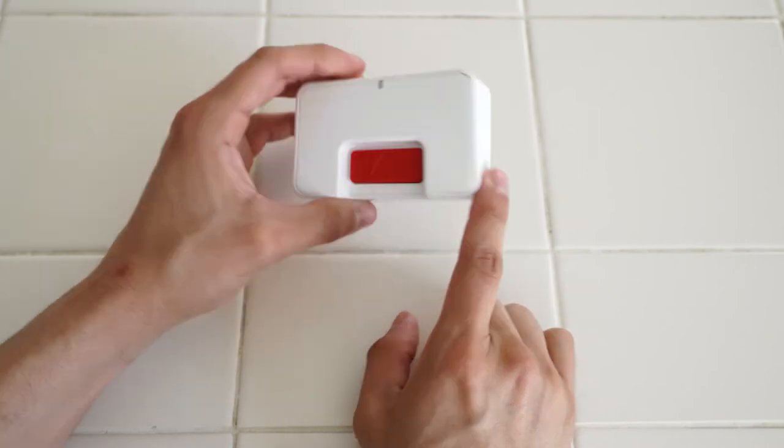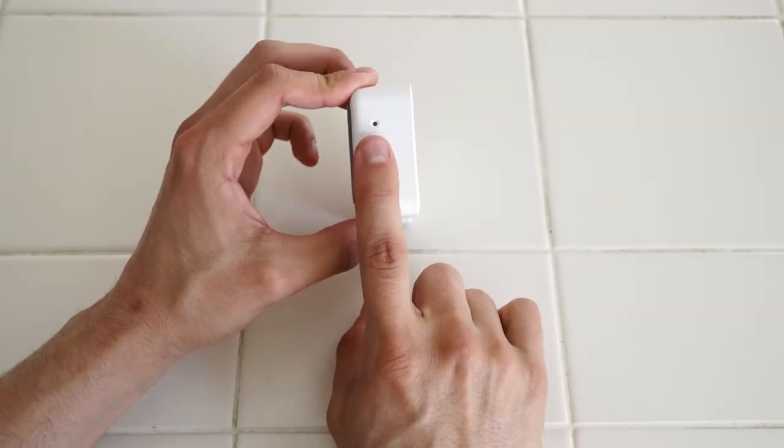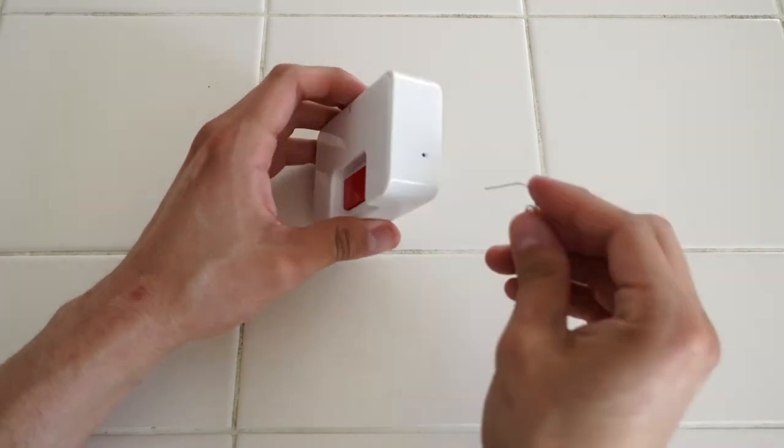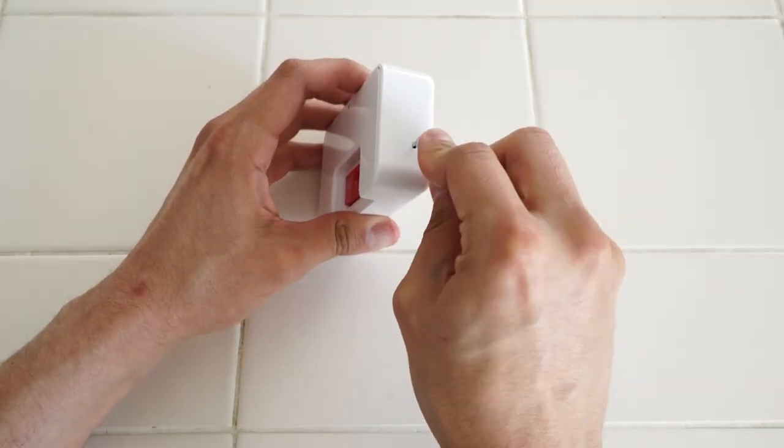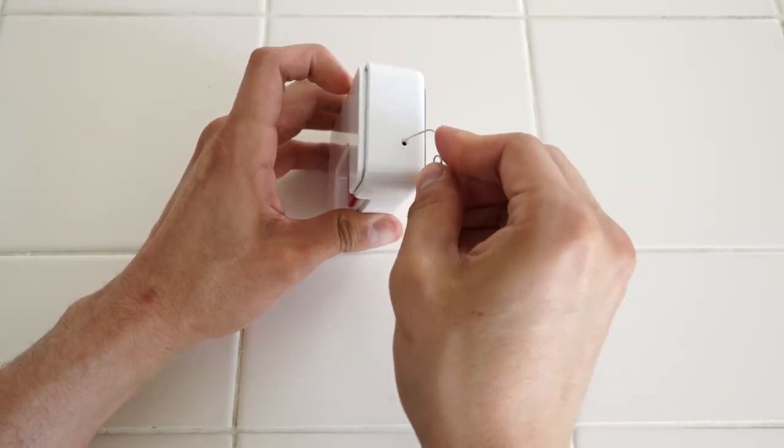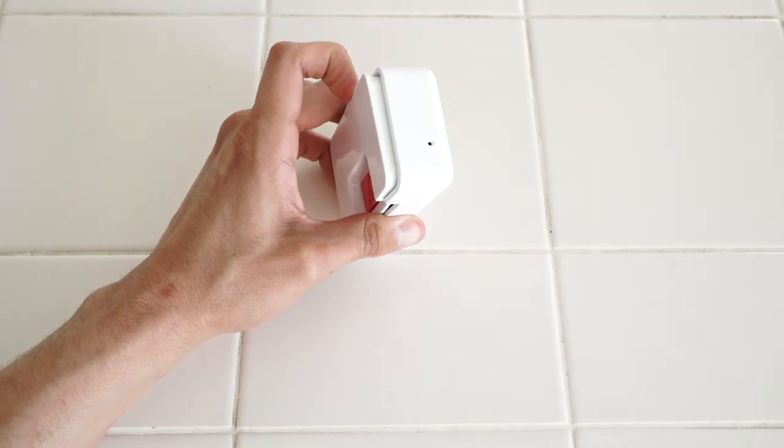On the right and left side of the wall button, there are two holes. Simply use the end of your paper clip and poke it into one of the holes. As you apply pressure, you'll notice that the front face of the wall button will come loose for you to detach.